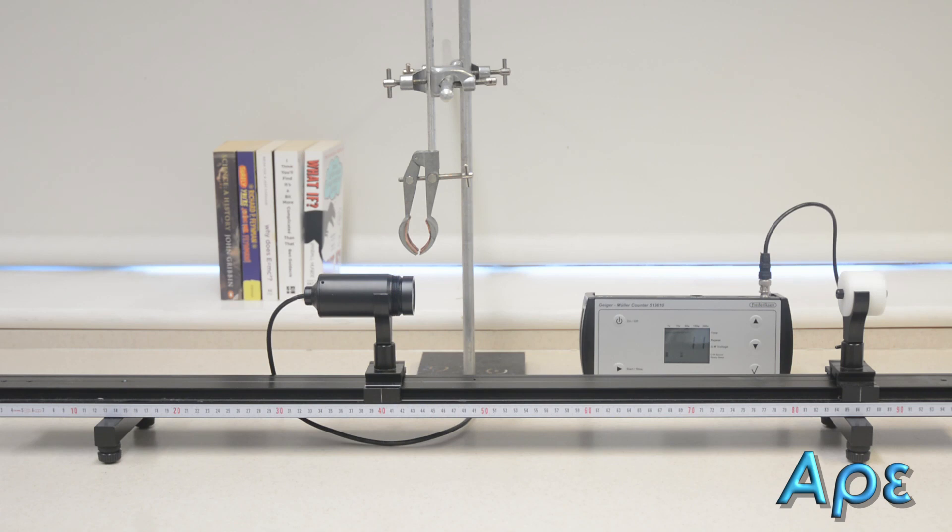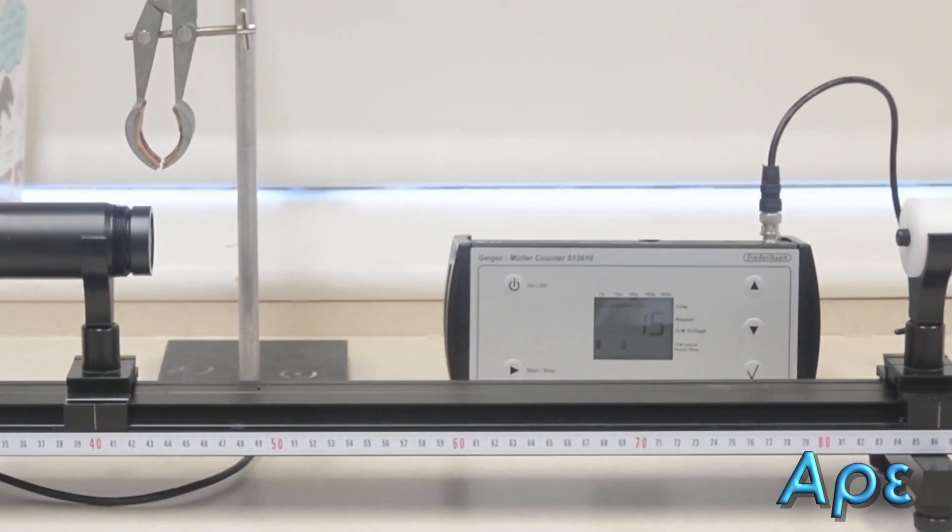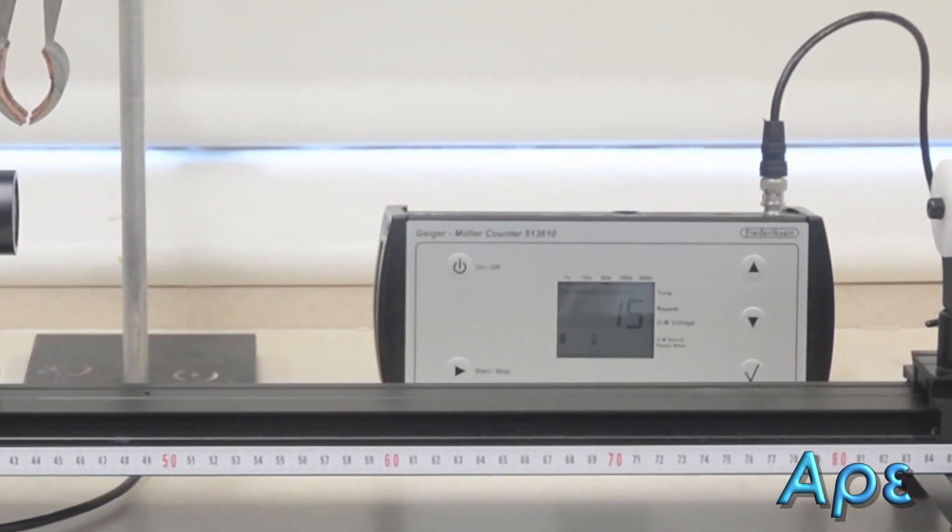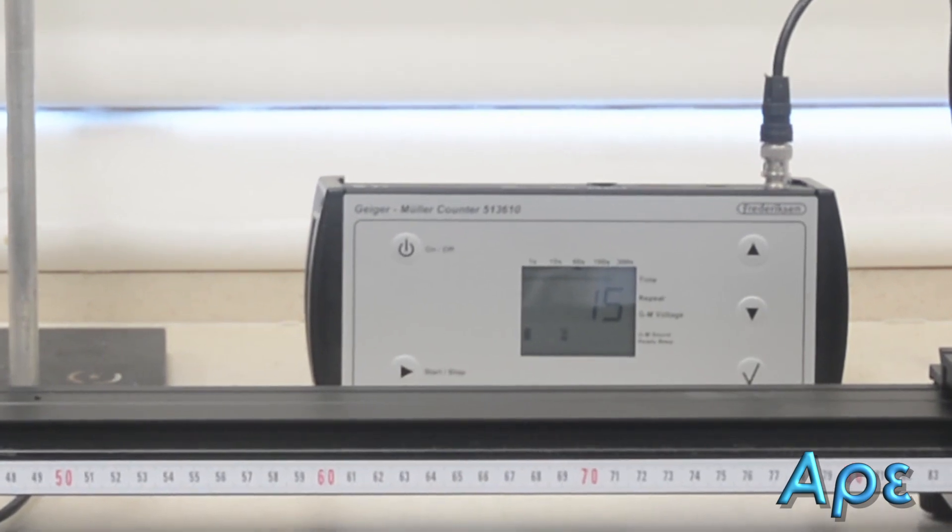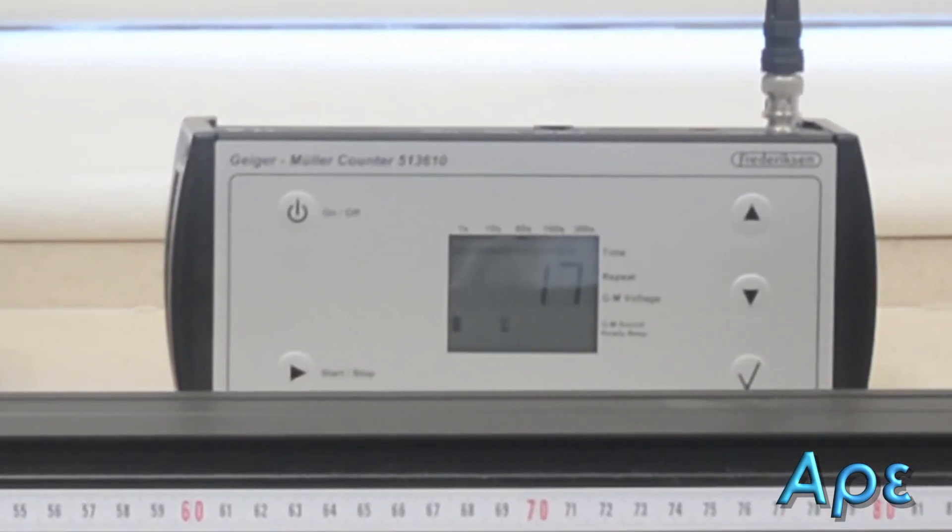For now, the counter has been started and we are measuring background radiation. As you'll see at the end of this clip, the background count is 18 counts in one minute. This is a slightly lower value than usual for this laboratory which tends to have around 0.5 becquerel background radiation.